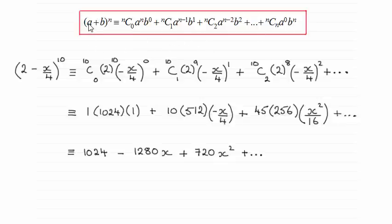you can see that what I've set is a is 2, b will be minus x over 4 and n, the power here, is 10.